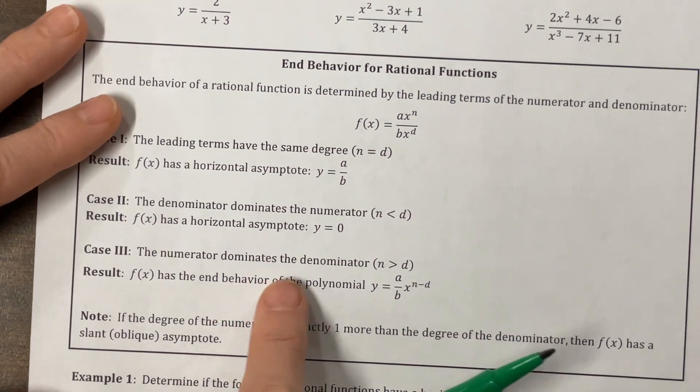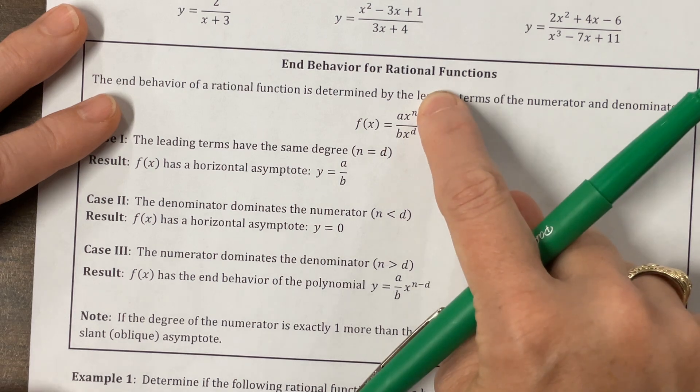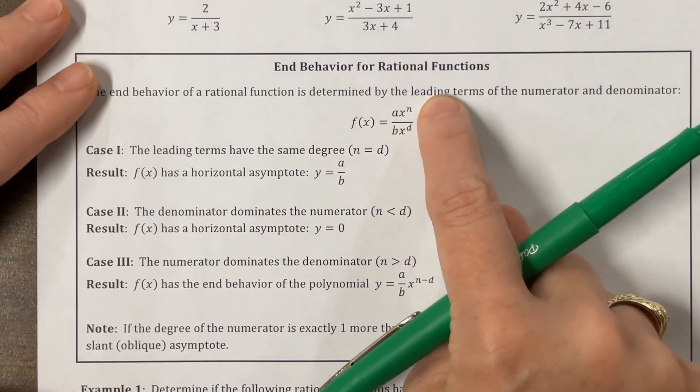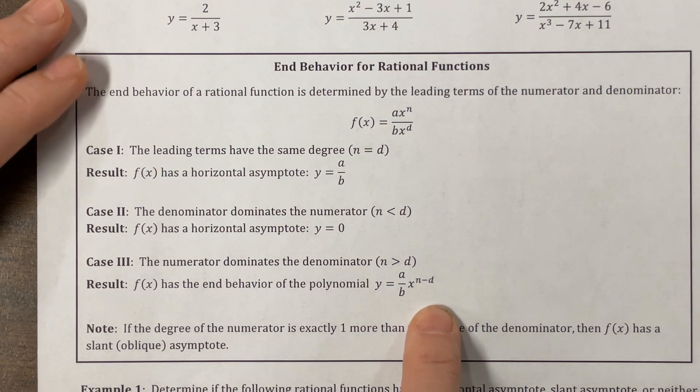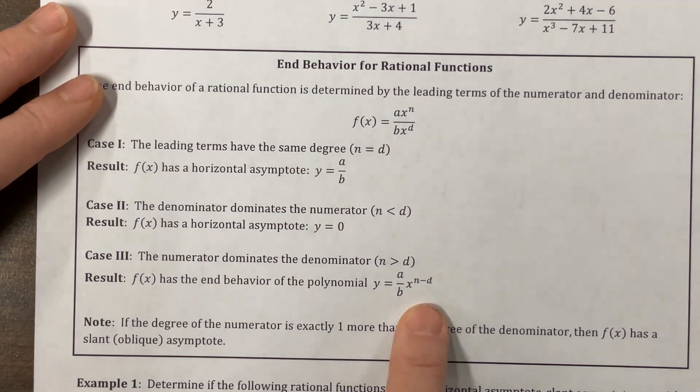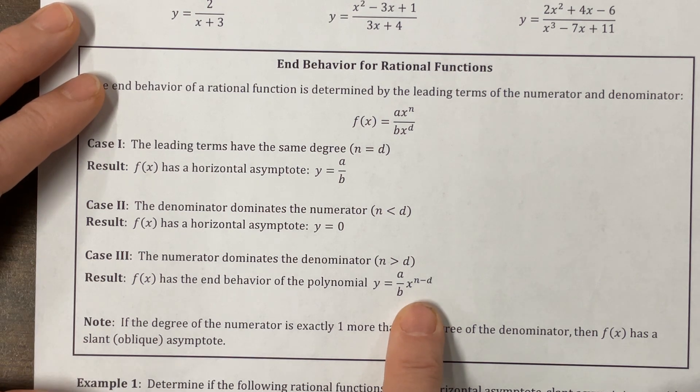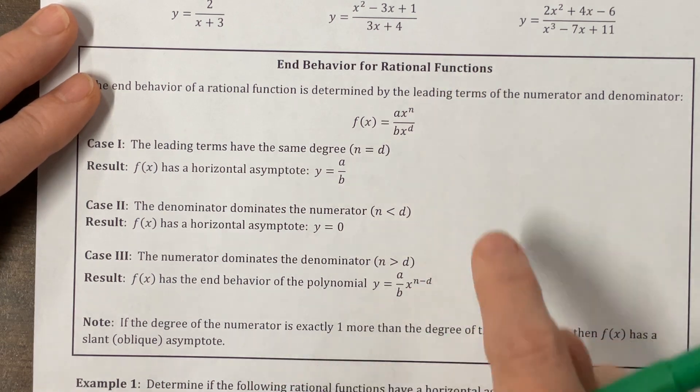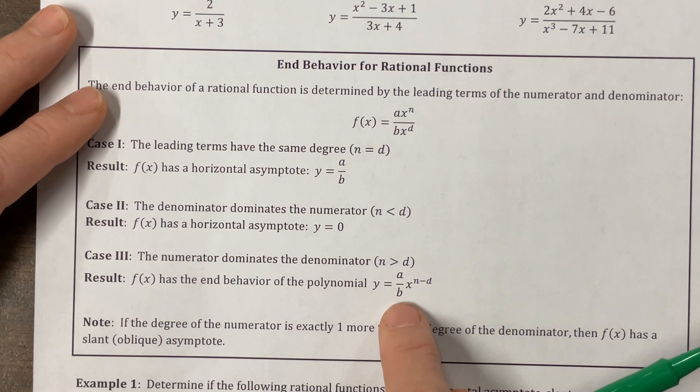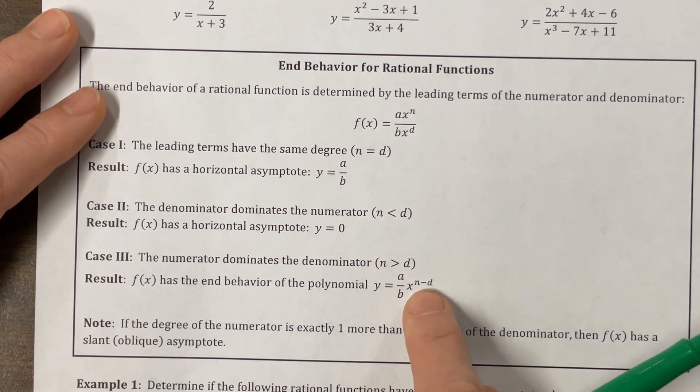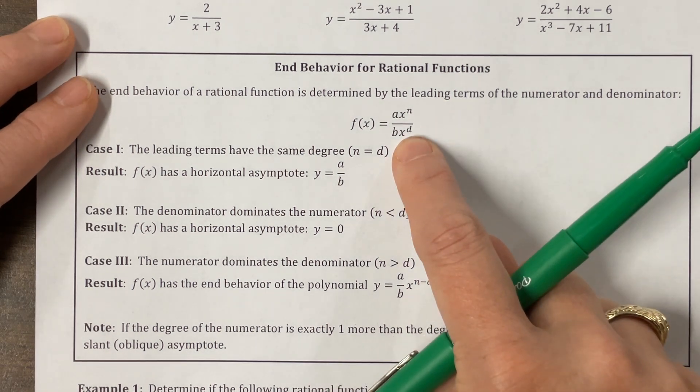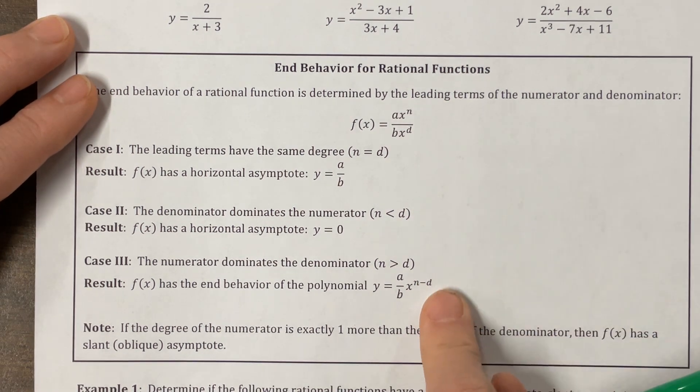Okay, if the numerator dominates the denominator, so the degree on the numerator is bigger than the degree on the denominator. This I would call top heavy as a little abbreviation. And then, oh, I like how he wrote this out. Then it has the end behavior, oh, I haven't used this idea before. I like this. Then it's either going to have a slant asymptote or a parabolic asymptote, it just depends on how different these degrees are from each other.